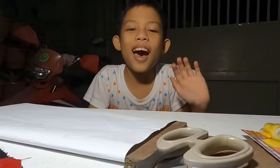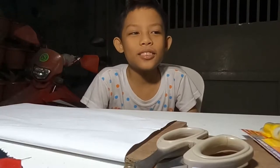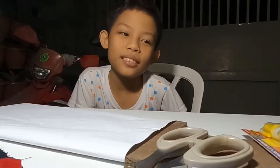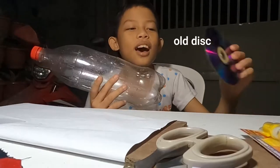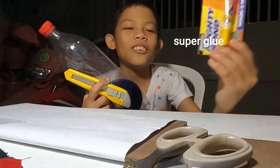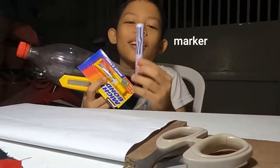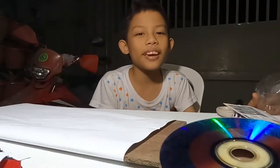Hi, today I'm gonna make a nice recycled pot using recycled materials. The materials that we're gonna use are plastic bottles, a disc, a cutter, a glue, a marker, and scissors. So let's begin.